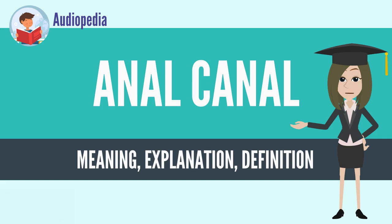Behind this lies the anal gland, which secretes lymphal discharge and built-up fecal matter from the colon lining. Gland expungement is done routinely every 24 to 36 months to prevent infection and fistula formation. It is differentiated from the rectum by the transition of the internal surface from endodermal to skin-like ectodermal tissue.